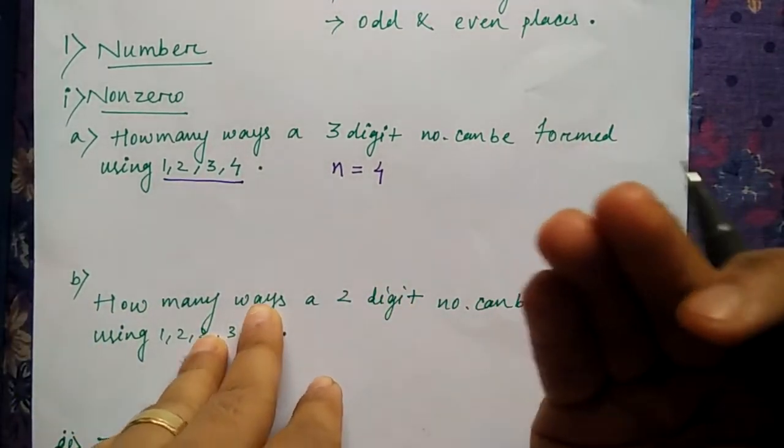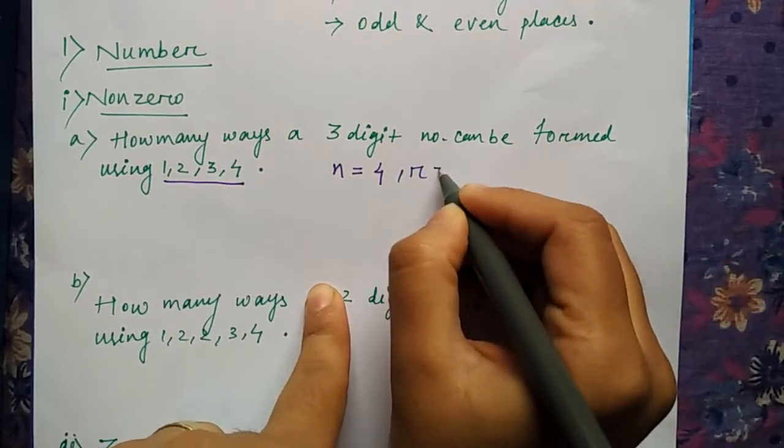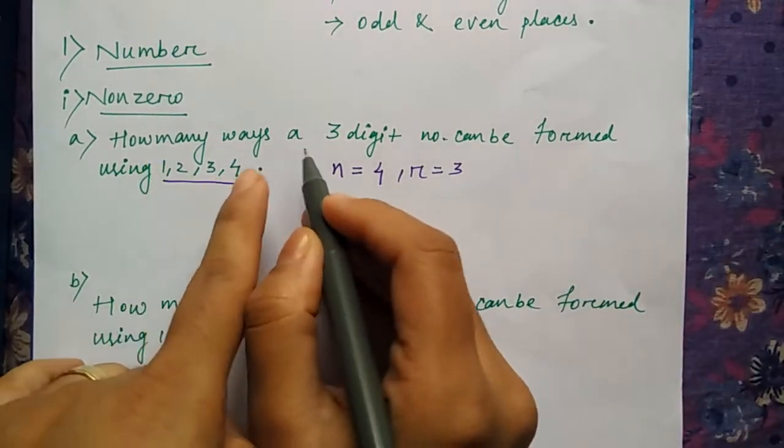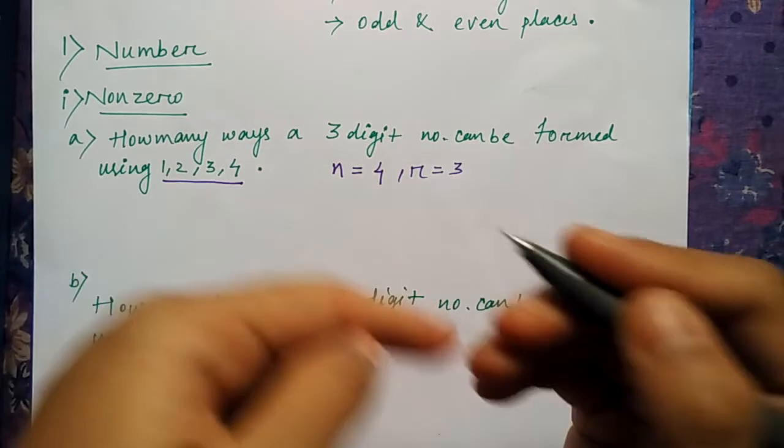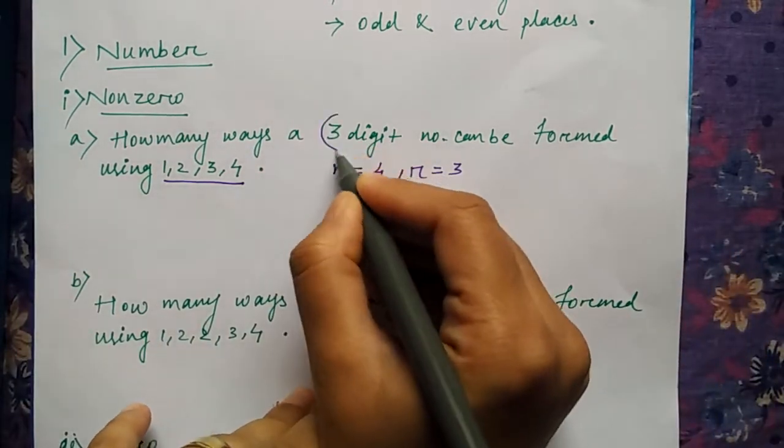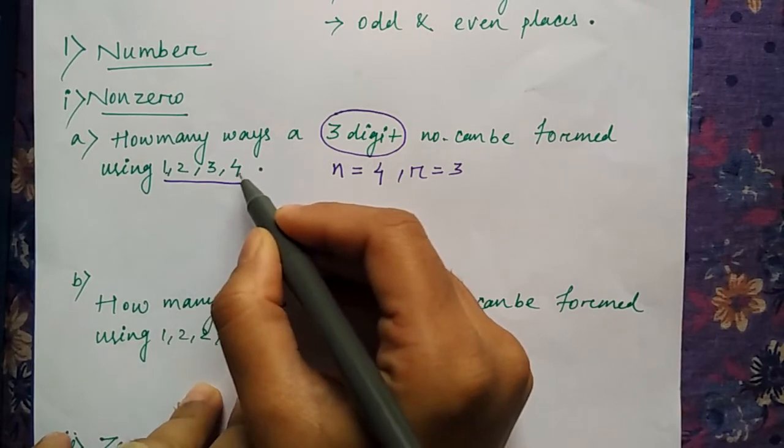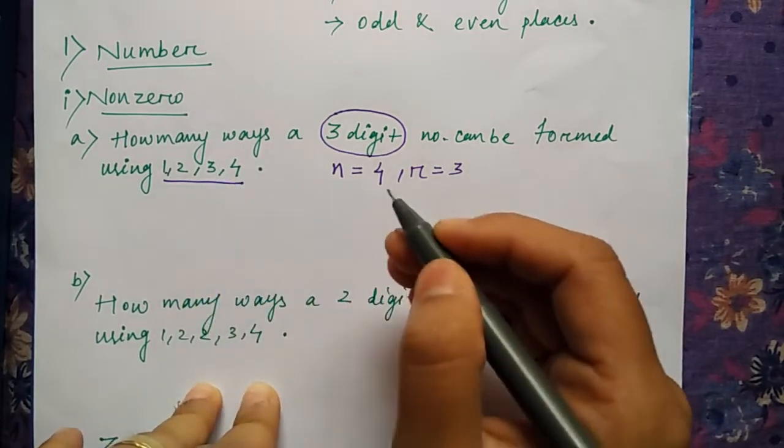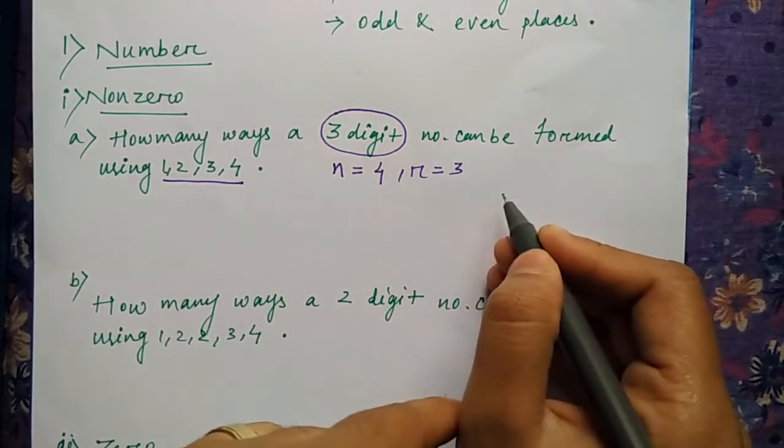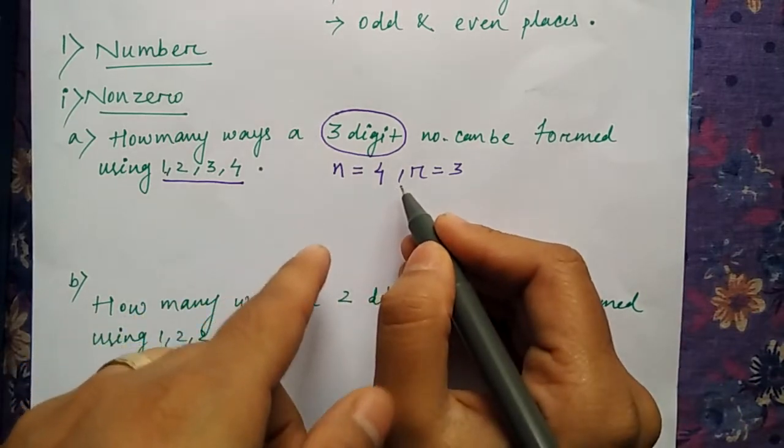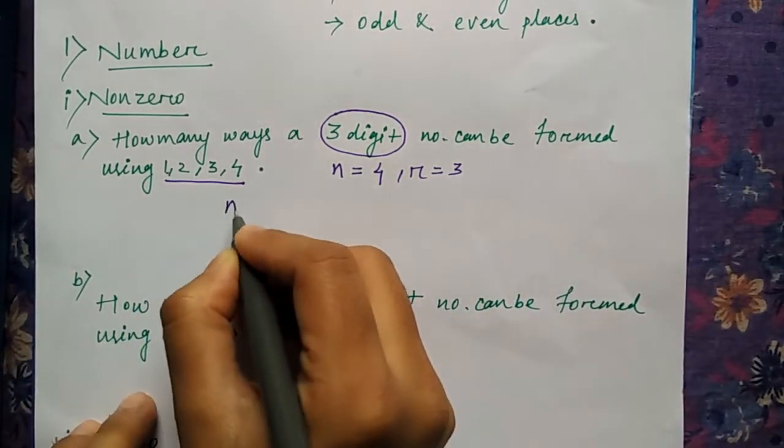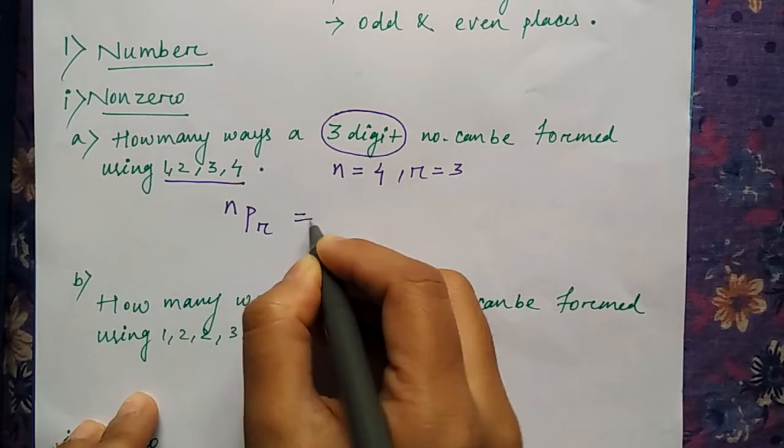And arrangement here is 3. Why 3? Because how many ways can a three-digit number be formed? You are trying to make some three-digit number using these four different numbers or four different objects. So you want the arrangement of a three-digit number using four objects.